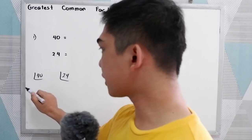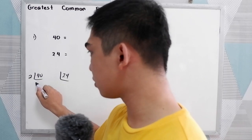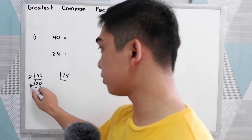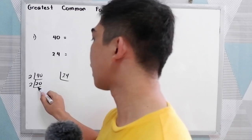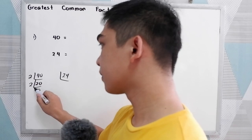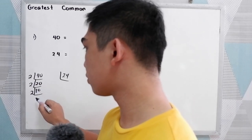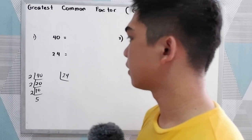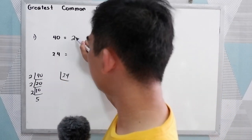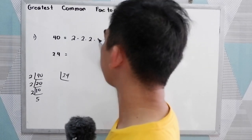So 40 is divisible by 2. 40 divided by 2 is 20. 20 is divisible by 2, and 20 divided by 2 is 10. 10 is divisible by 2, so 10 divided by 2 is 5. So the prime factors of 40 are 2 times 2 times 2 times 5.